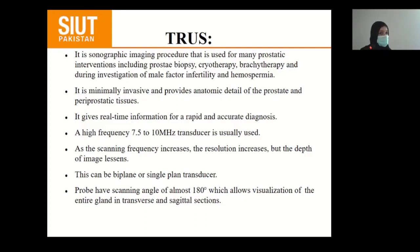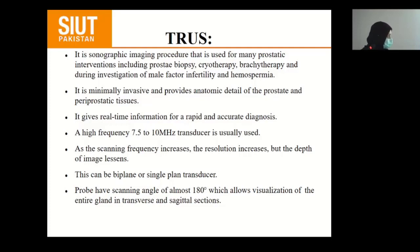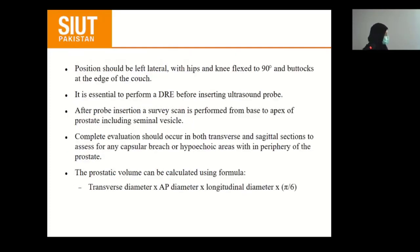Transrectal ultrasound sonography: it is a sonographic imaging procedure used for many prostatic interventions including prostatic biopsy, cryotherapy, brachytherapy, and during investigation of male factor infertility and haemospermia. It is minimally invasive and provides anatomical detail of the prostate and periprostatic tissue. It gives real-time information for rapid and accurate diagnosis. A high frequency 7.5–10 MHz transducer is usually used. As scanning frequency increases, resolution increases but depth of imaging lessens. The probe can be biplane or single plane, with a scanning angle of almost 180 degrees allowing visualization of the entire gland in transverse and sagittal sections. The patient should be positioned in the left lateral position with hip and knee flexed to 90 degrees. A DRE should be performed before inserting the probe. After the probe is inserted, a survey scan is performed from base to apex of the prostate including the seminal vesicles.